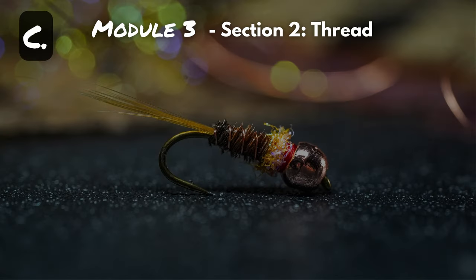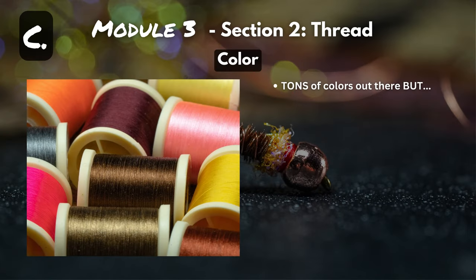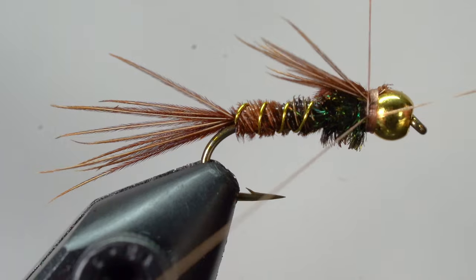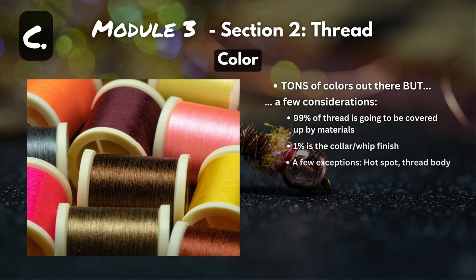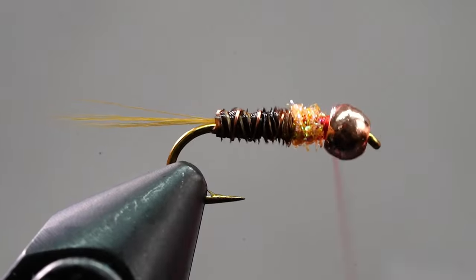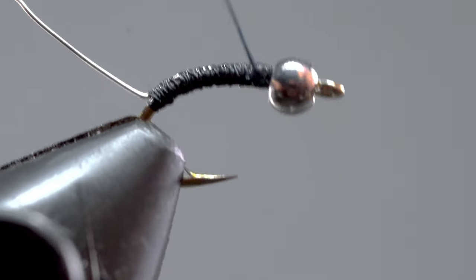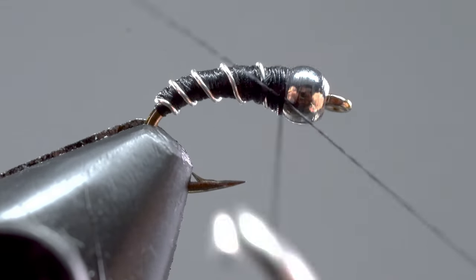Now let's talk about C of our ABCs — and that's color. Here are just a few of the tons of different colors of fly tying thread out there. Before you go buy every color of the rainbow, here are a few considerations. First, 99% of the thread is going to be covered up by materials anyway. The 1% you'll actually see is the collar — the whip finish. There are a few exceptions: hot spots where you purposely wrap extra thread for a pop of color, or thread body flies like a zebra midge where thread forms the body.